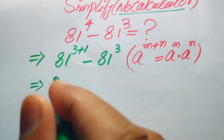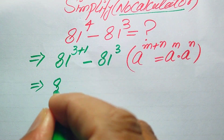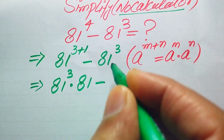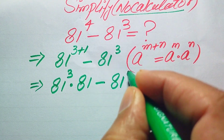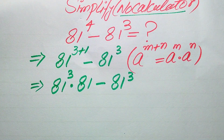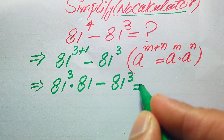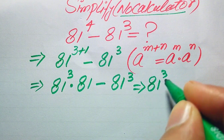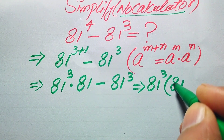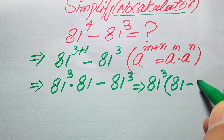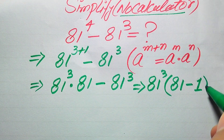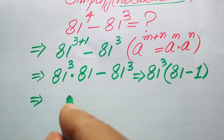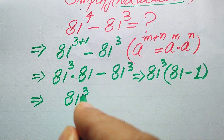According to this exponent rule, we break the first exponent and rewrite 81⁽³⁺¹⁾ as 81³ × 81, then subtract 81³. Both terms contain 81³, so we take 81³ as a common factor, leaving 81 minus 1 inside the bracket.